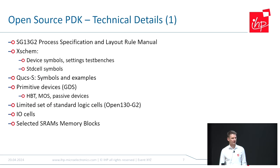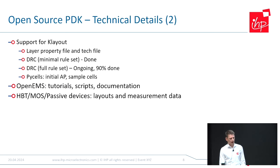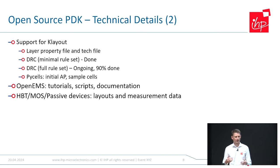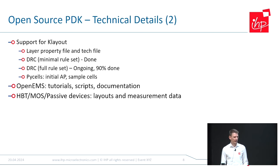We have a limited set of digital standard cells you can use to design digital circuits, some IO cells, and selected SRAM memory blocks. Regarding the SRAM, we published some different sizes — if you need others, just ask. On the second page of technical details: we support KLayout with layout property files so you can load your GDS in the right color scheme. We have DRC — a minimal rule set that is fully working and published. A full rule set is ongoing and almost done. We also have an initial API for PCells.